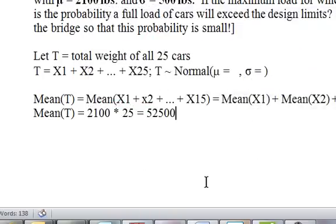So 2100 times 25 is 52,500. That's the mean of 25 individual cars added up, the mean weight 52,500.